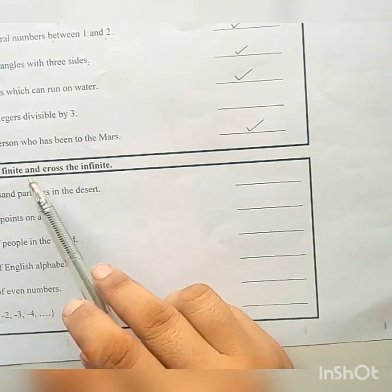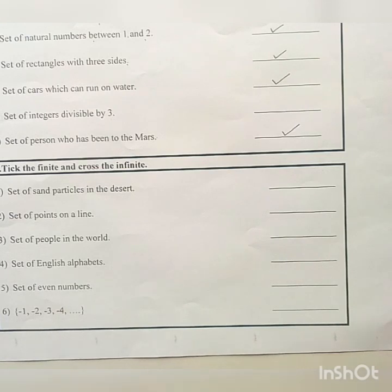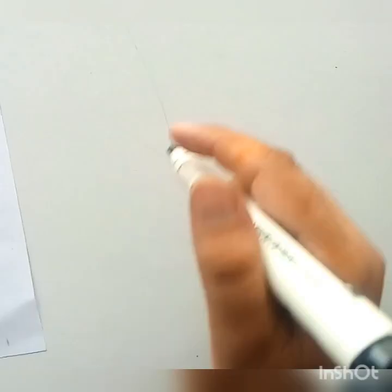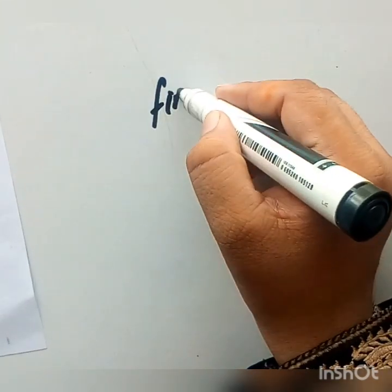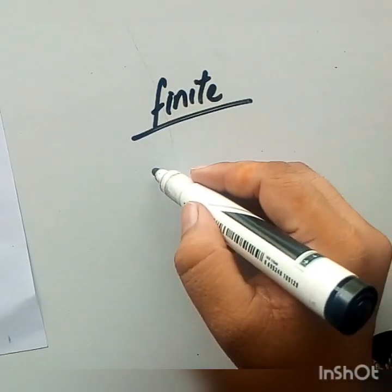Question number 4 is tick the finite and cross the infinite. First, we know what is finite and infinite. The finite sets are those sets which have finite number of elements. Means, a set, for example,